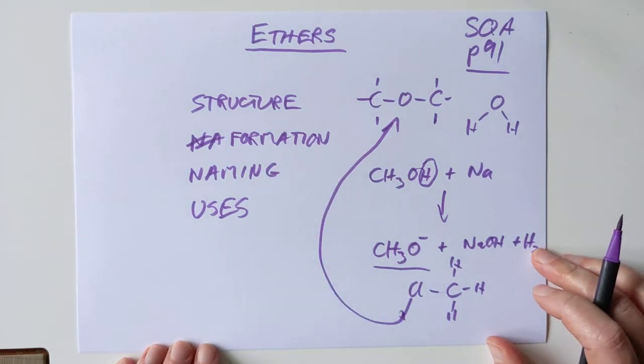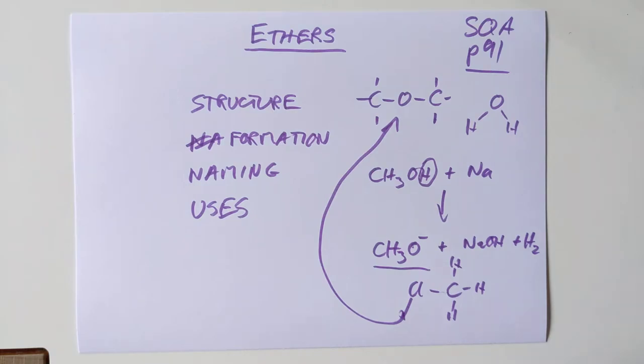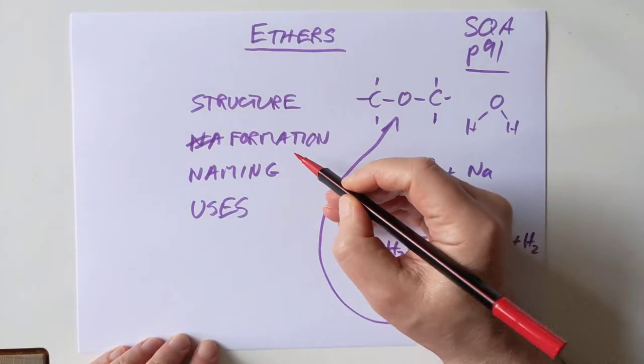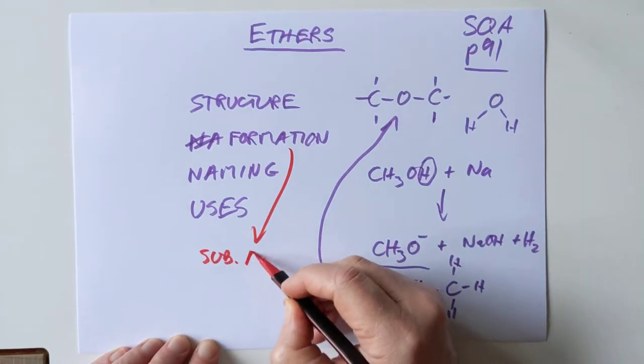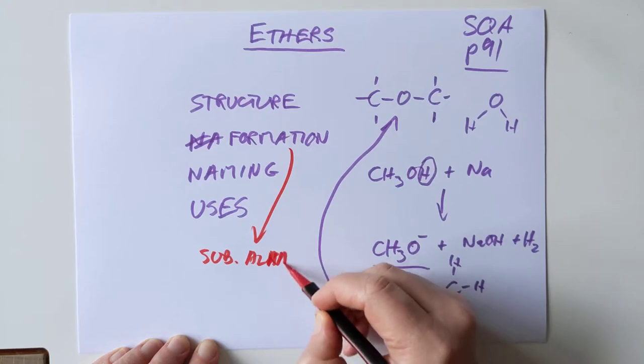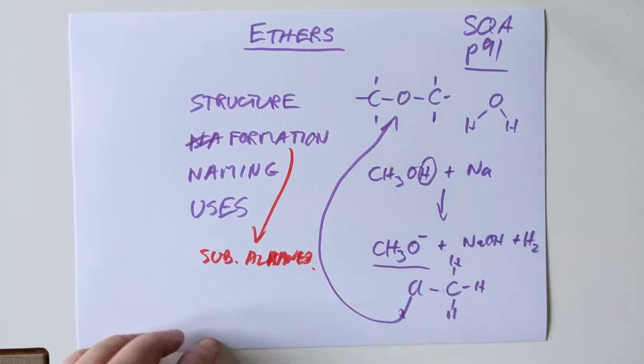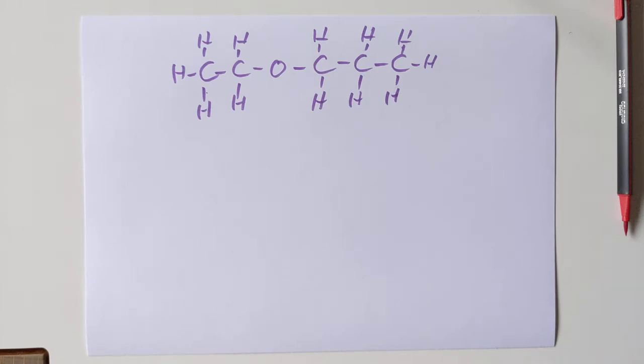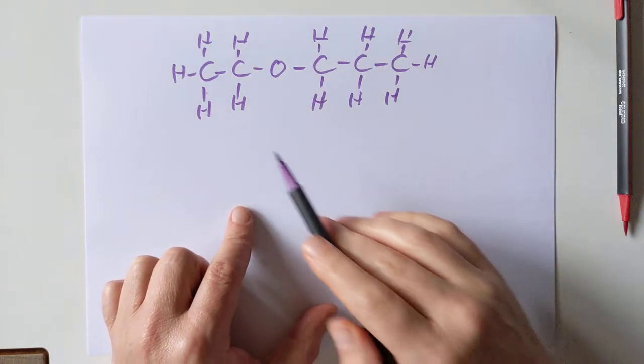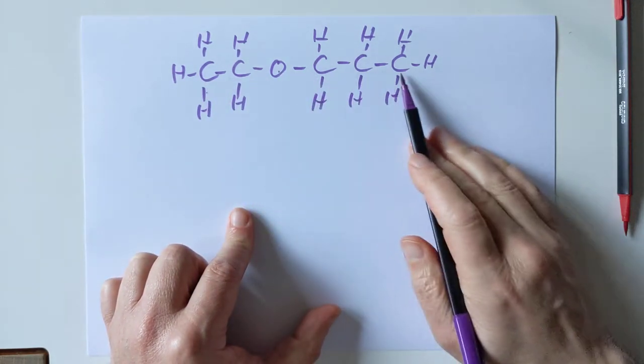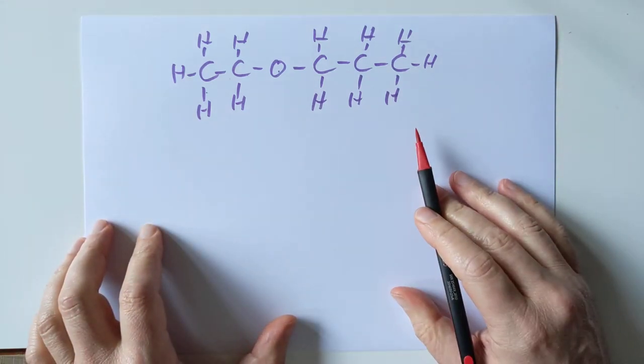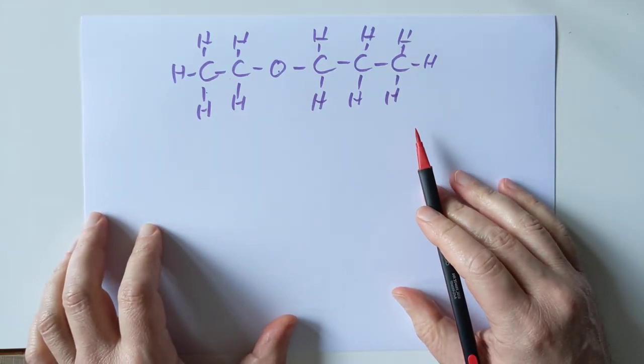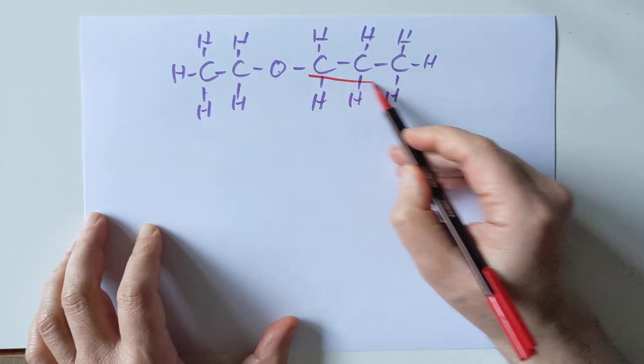Naming them. When it comes to naming, ethers are regarded as being substituted alkanes. They're a bit like substituted alkanes. Let me explain what I mean on a fresh sheet of paper. If we have a look at this member of the ether family here, two carbons, oxygen, three carbons. What we do is we look for the longest chain of carbon atoms, which of course is that.